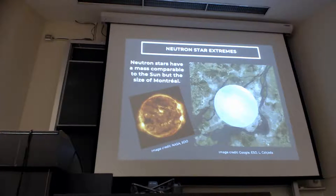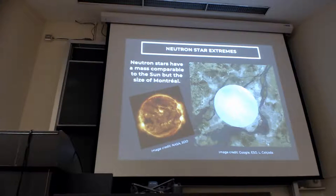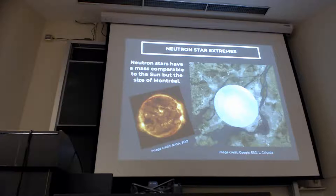Neutron stars have about the mass of the sun, but they are the size of Montreal. So imagine the sun compressed into something the size of this city — that's really, really different scales.